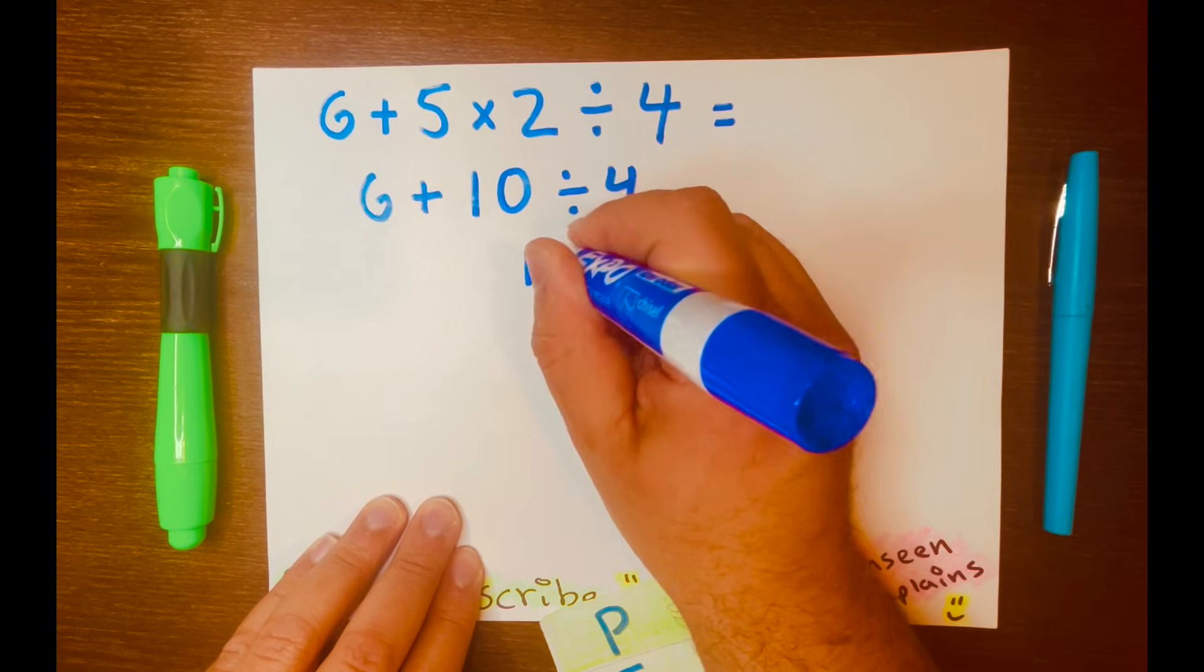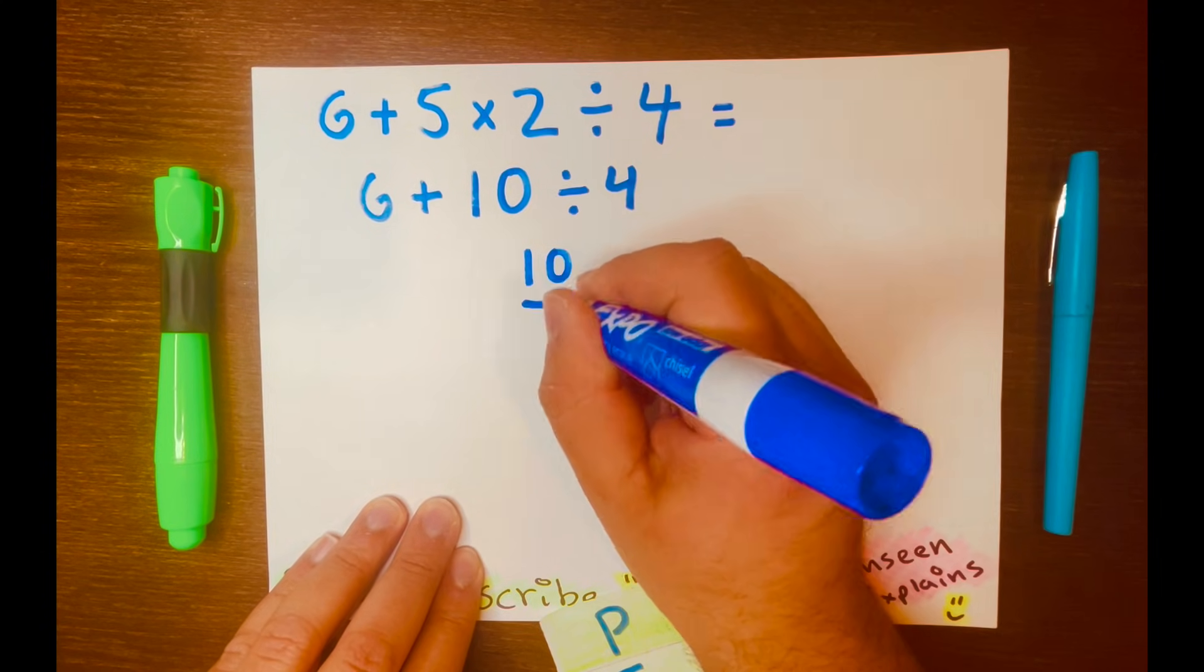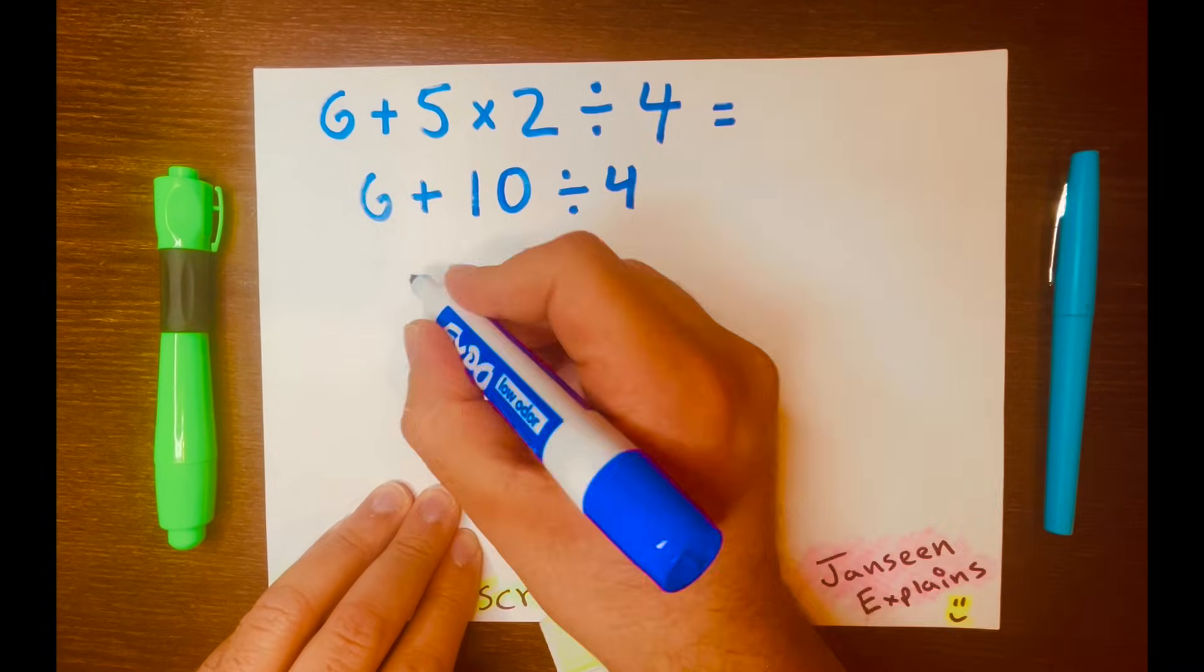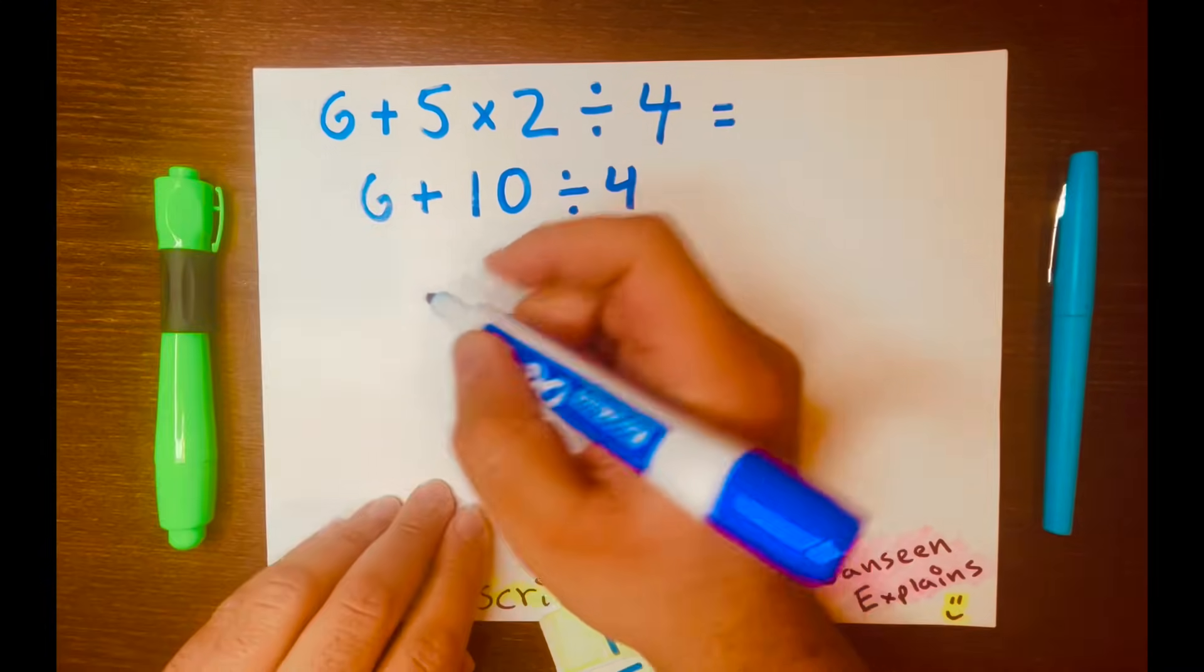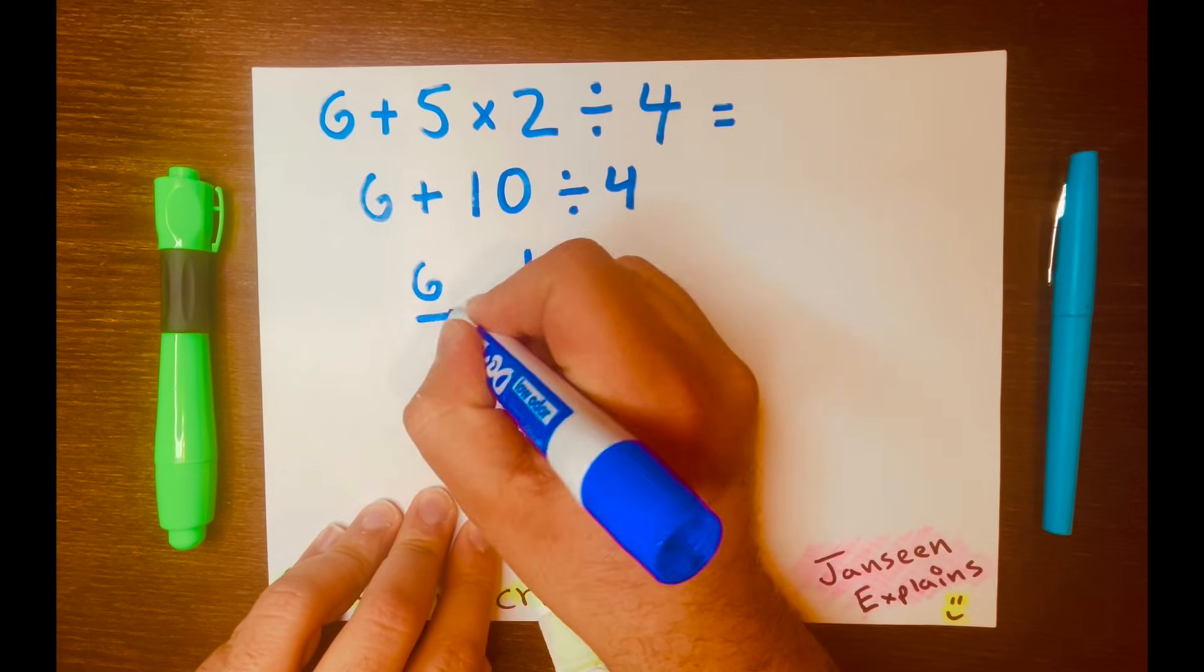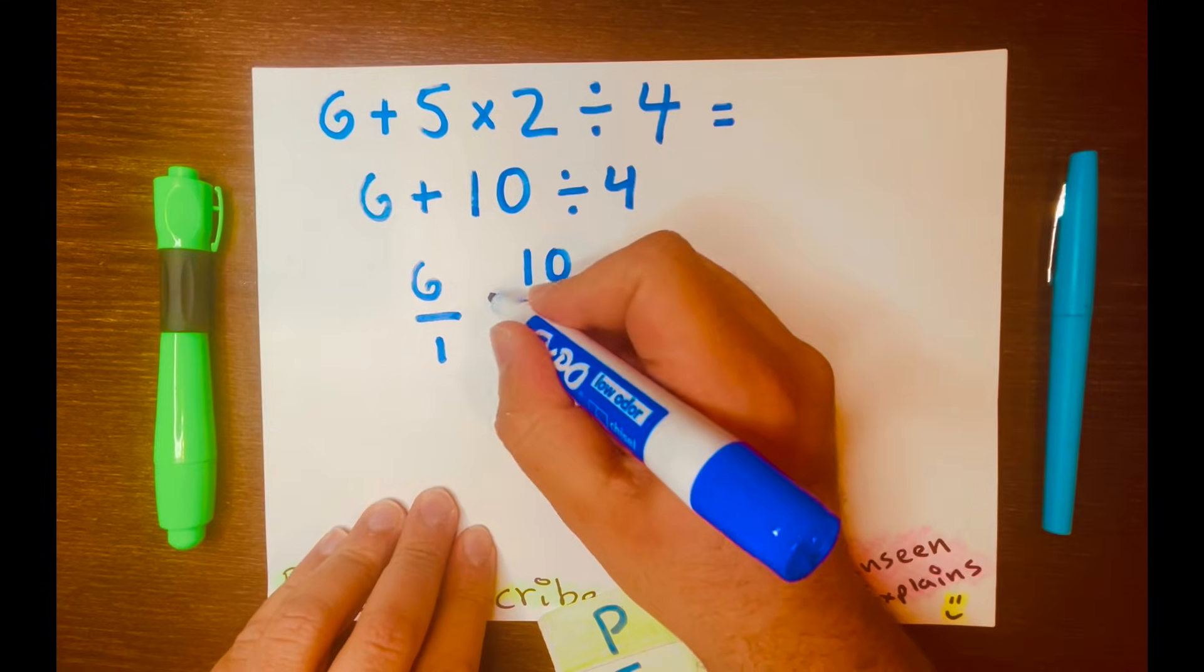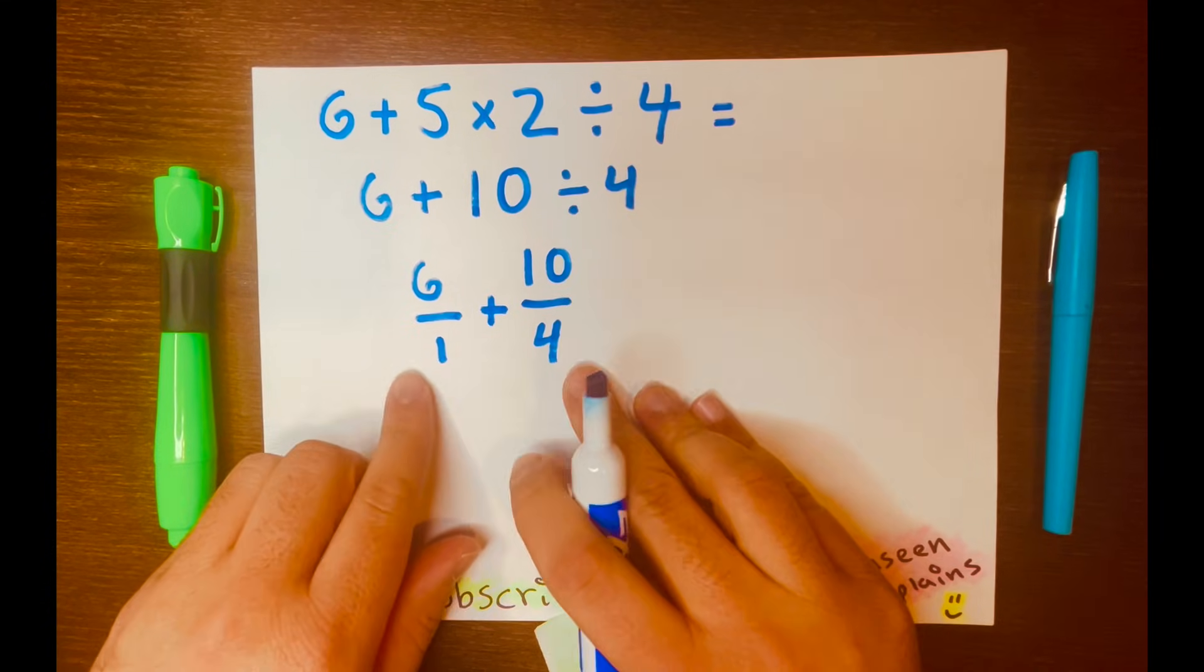So you'll write it like this: 10 divided by 4, because we want to make the math easy. Let's bring down the 6 and turn the 6 into a fraction. We know that 6 over 1 equals 6, does not change the 6. And then we are adding these two fractions.